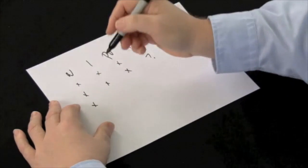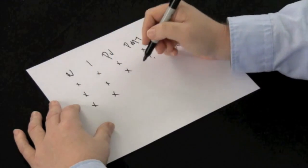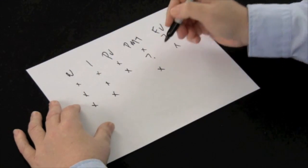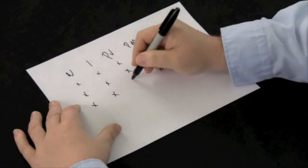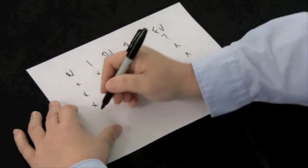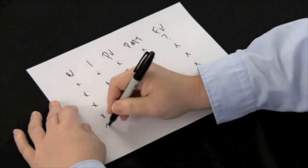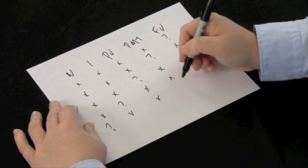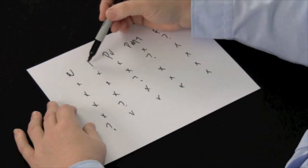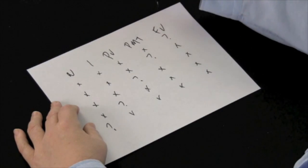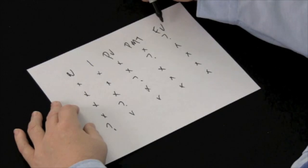If you know the number of payments, the interest rate, the payment amount, and the future value, you can calculate a present value. And of course you can keep going and calculate a rate of return if you know the other four variables, and you can even calculate a number of payments if you know your rate of return, your present value, your payment amount, and your future value.